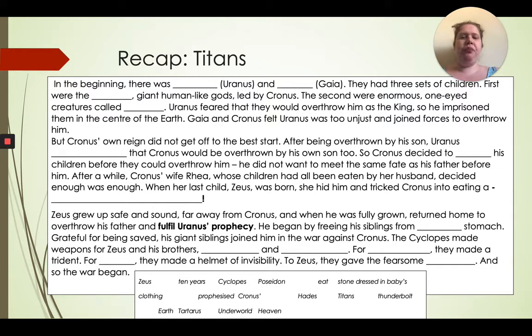When her last child Zeus was born, she hid him and tricked Cronus into eating a [stone dressed in baby clothing instead]. Zeus grew up safe and sound far away from Cronus. When he was fully grown, he returned home to overthrow his father and fulfill Uranus's prophecy. He began by freeing his siblings from [Cronus's stomach]. The Cyclops made weapons. For [Poseidon] they made a trident, for [Hades] they made a helmet of invisibility, to Zeus they gave the fearsome [thunderbolt]. And so the war began.